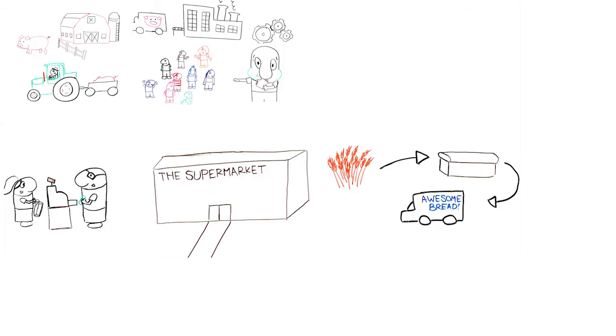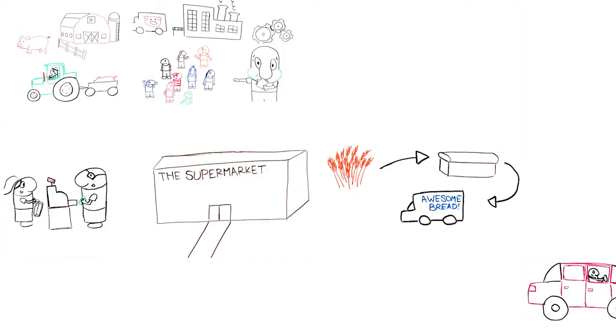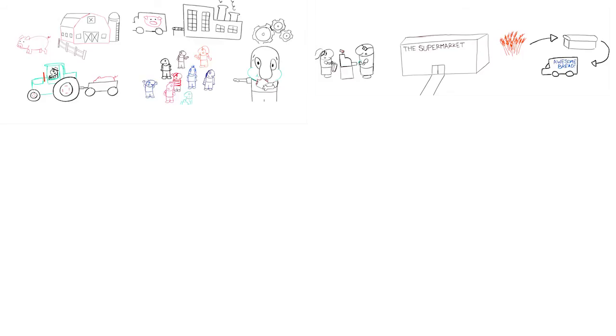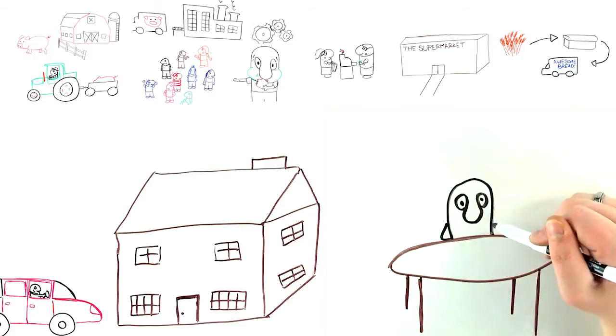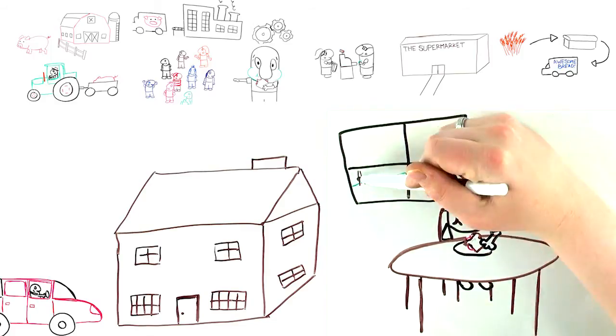Did you drive to the store to buy the baloney, bread, and mustard? Then you need auto insurance. You also have to eat that sandwich someplace. Is your kitchen in a house, condo, apartment, or mobile home?